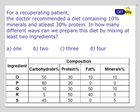Let's look at the first question. Please pause the video and try to solve this question, then I will give you the answer. If you look at this question, it was fairly simple. The doctor recommended a diet of 10% minerals and 30% proteins. So I need to have at least 30% protein — this means it can be O, Q, R, or S. So P is out.